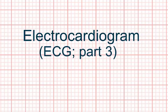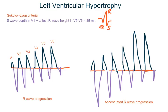Hello everyone, let's discuss some more ECGs in this lecture. You will come across left ventricular hypertrophy very often during your practice, so you should be able to diagnose it. There are many ECG criteria for LVH; however, the most common is Sokolow-Lyon criteria.